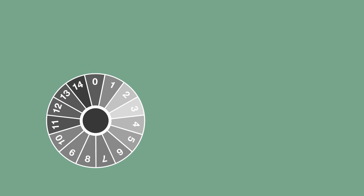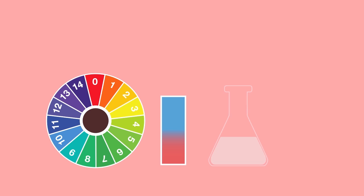An indicator changes color depending on the pH of the solution analyzed. Because of this, they are also known as pH indicators.